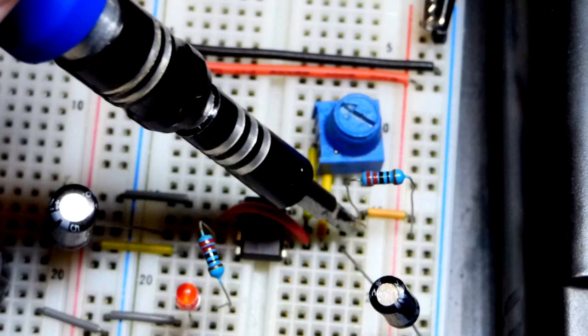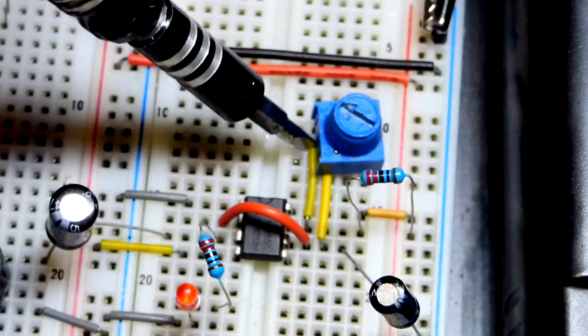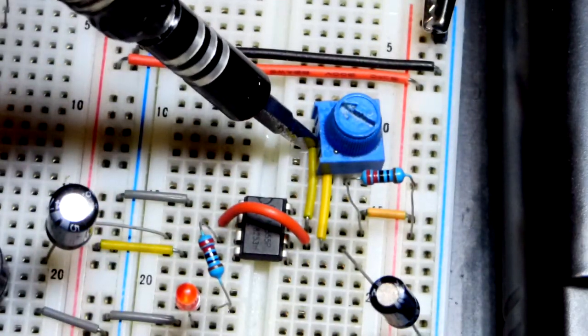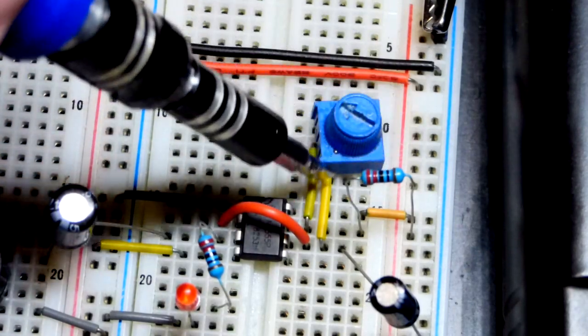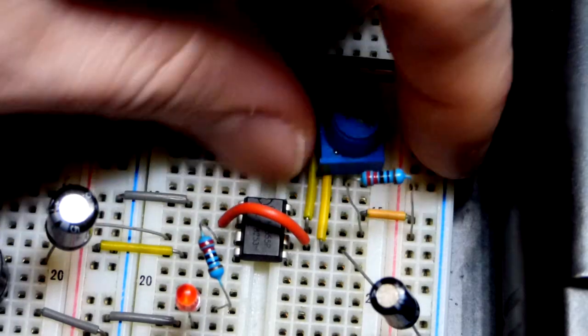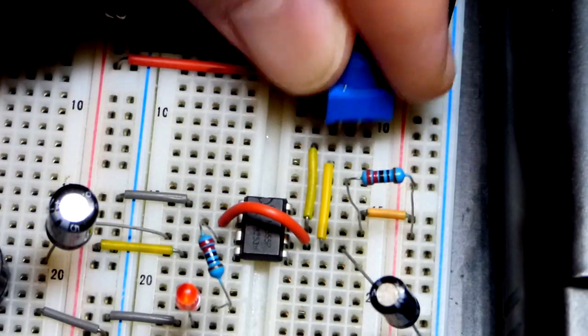But it also goes to the wiper of the trim pot right there. Right now the wiper is set there, so we got all this resistance coming over here to this other jumper underneath right there. I'll pop that up so you can see them.